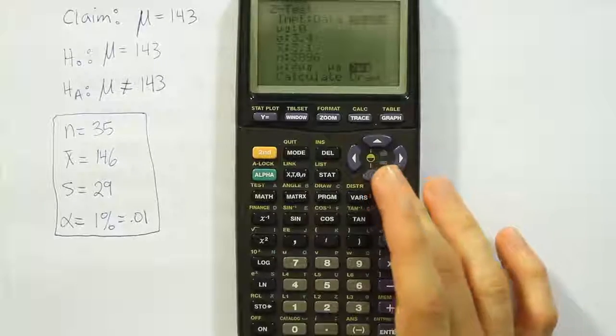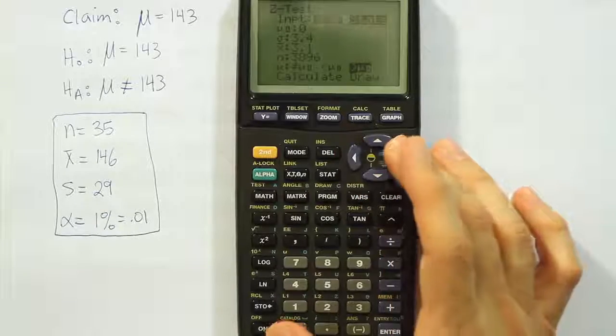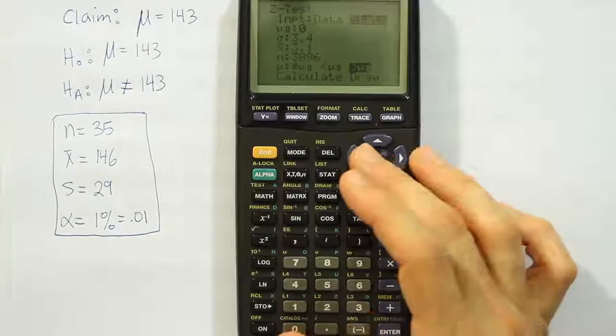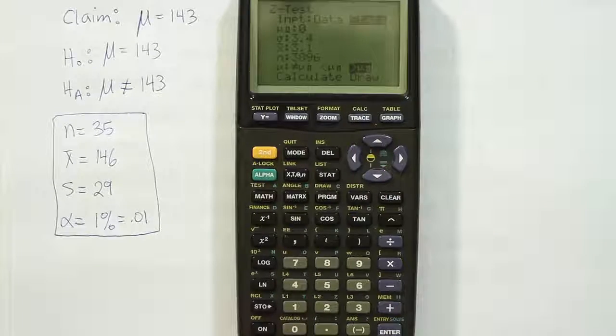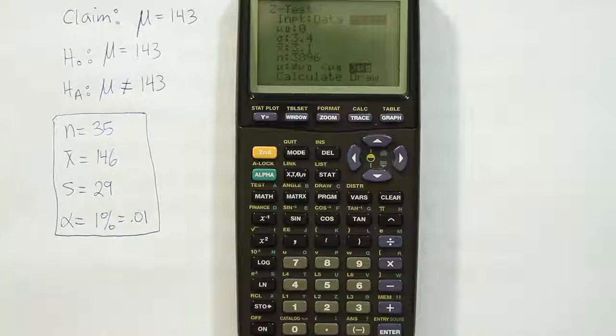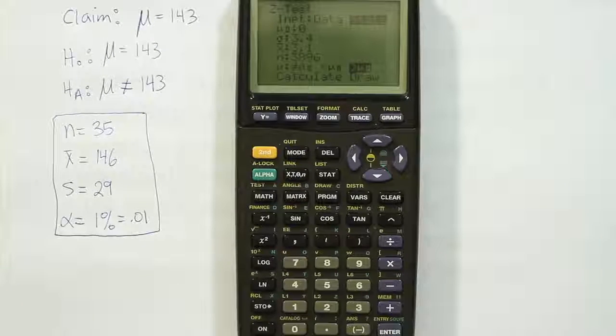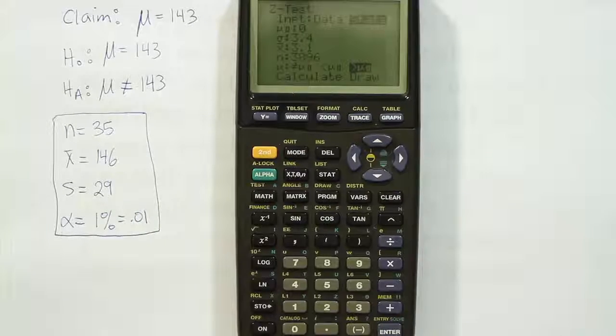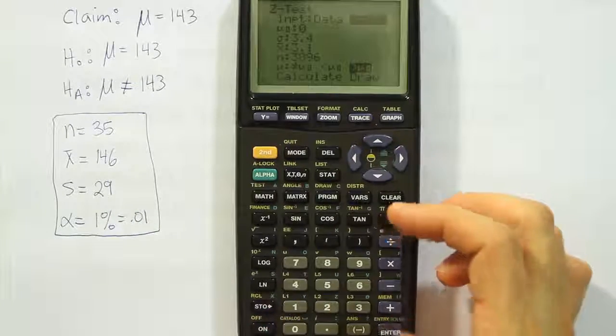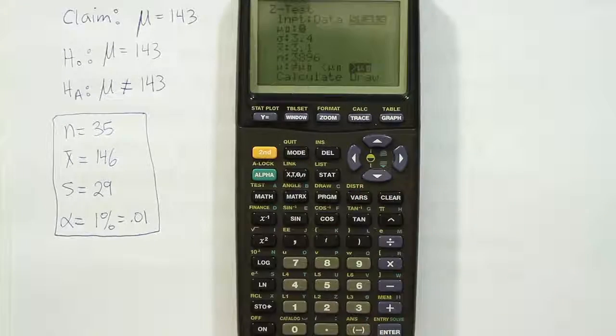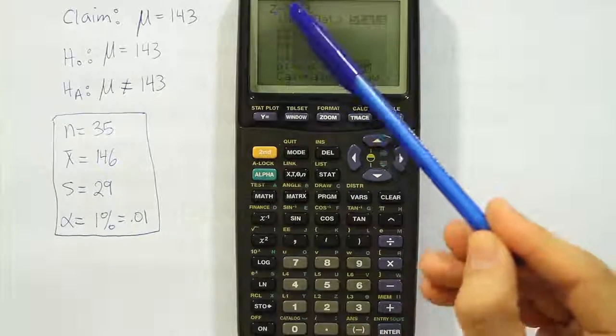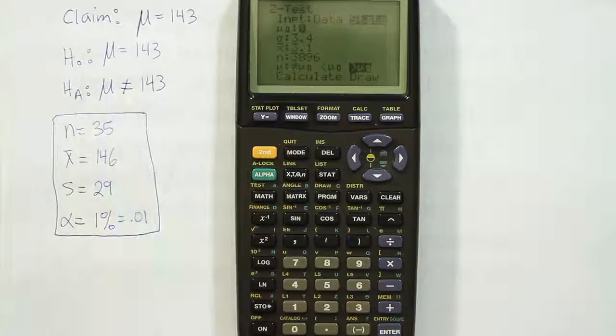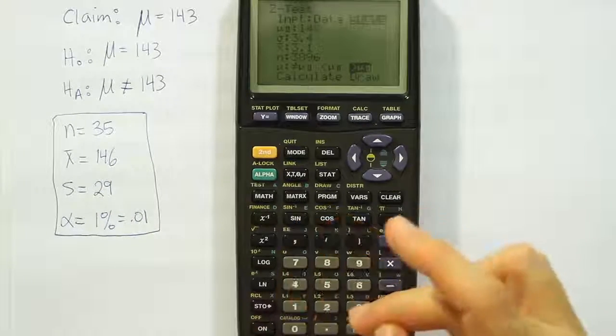Let's look at the two options. We either have data or stats. We choose stats as long as we have summary values like x-bar and s. If we had the actual raw data numbers, if we had the 35 individual data values, then we would choose the data option. But since we don't have that, we're going to do stats. Come down here, and what it's asking for is the value from H0. The value from H0 is the number you find in H0. That's 143 for us. Let's type that in, 143.